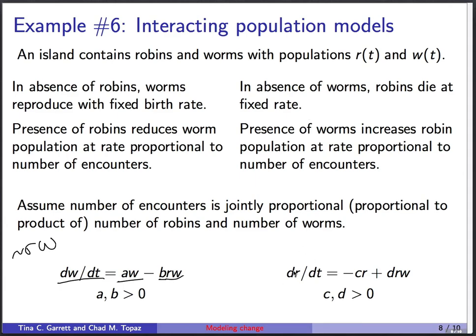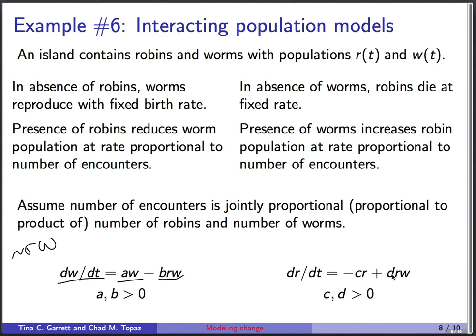On the right-hand side, we also need a differential equation for the robins. In the absence of worms, robins die at some fixed percentage rate per year — say 5% — because they have no food. So dr/dt equals minus c times r, where c is a positive constant causing the robin population to decrease. But when robins and worms encounter each other, this causes the robin population to increase because the robins get food. The number of encounters is proportional to the product r times w, and d is the constant of proportionality measuring how much those interactions help the robin population.